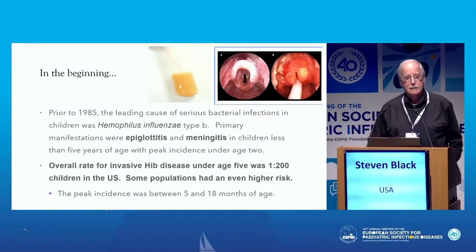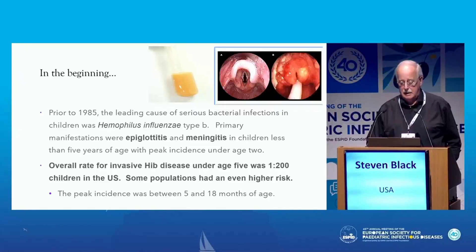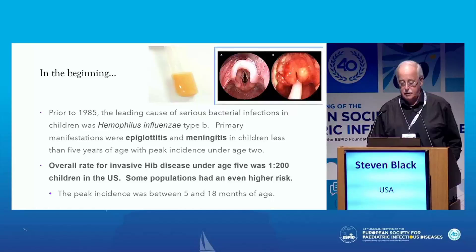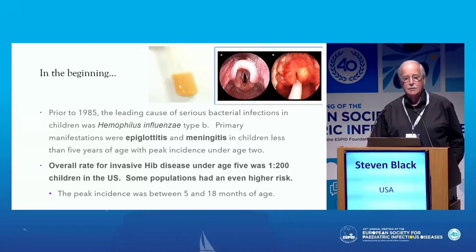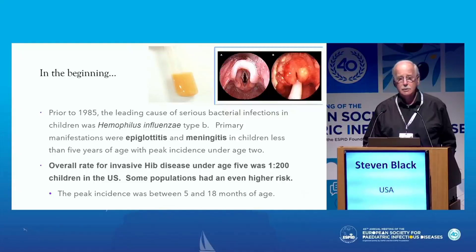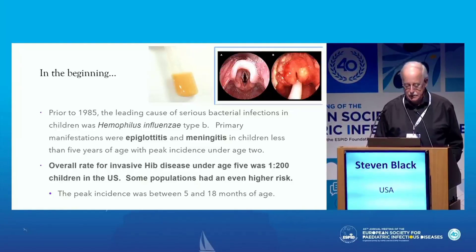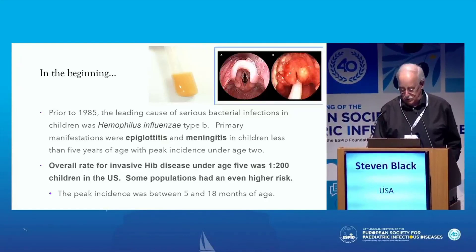Prior to the 1980s, Haemophilus influenzae type B was the most common cause of bacterial disease in young children. Its most common manifestations were epiglottitis and meningitis in children less than five years of age, and it was extremely common. We now talk about meningococcal disease in the 1 in 100,000 range, but about 1 in 200 children prior to the introduction of vaccines developed serious bacterial disease due to Haemophilus influenzae type B. In some populations, that risk was even higher.